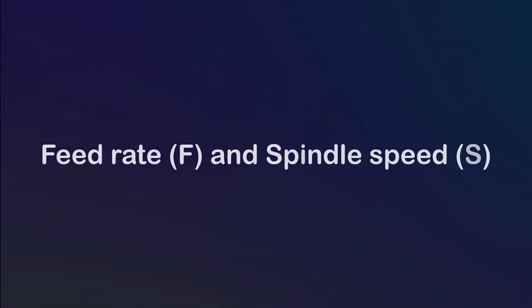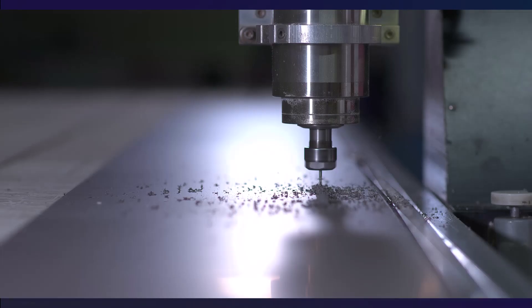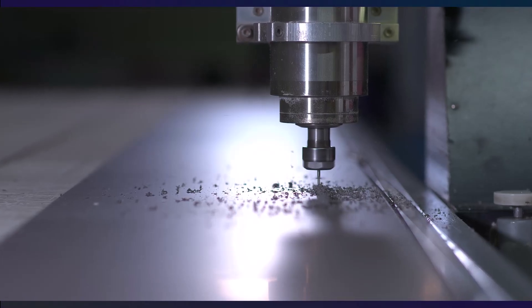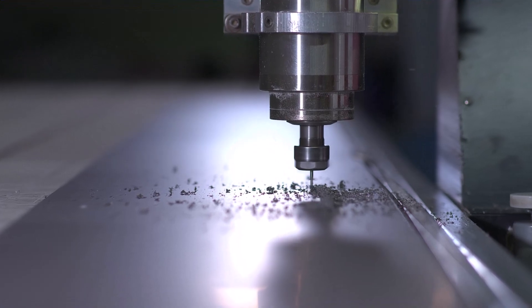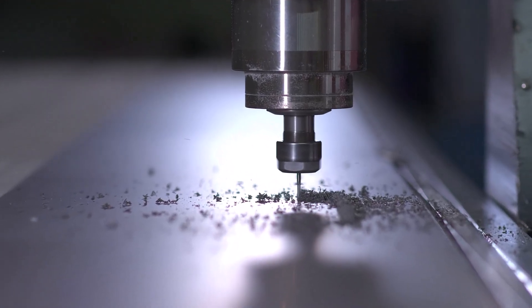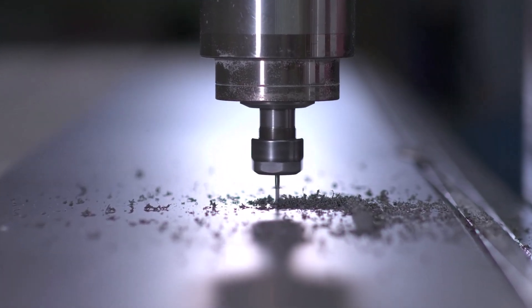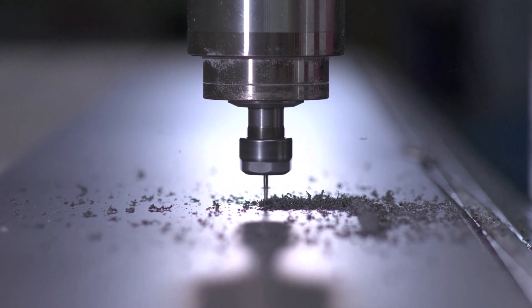The feed rate, often designated with an F in G-code, is the speed at which the tool moves through the material. This rate is typically measured in inches per minute or millimeters per minute, depending on your system.